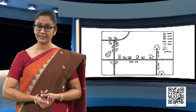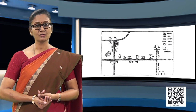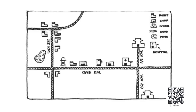Now look at this map drawn by his sister showing the route from her house to her school. This map is definitely different from the one drawn by Raghav. Here different symbols are used to depict various landmarks en route to the school, and longer line segments are drawn to depict longer distances. This means the map has been drawn to a scale. Now can you answer the following questions by looking at the map drawn by Raghav's sister?